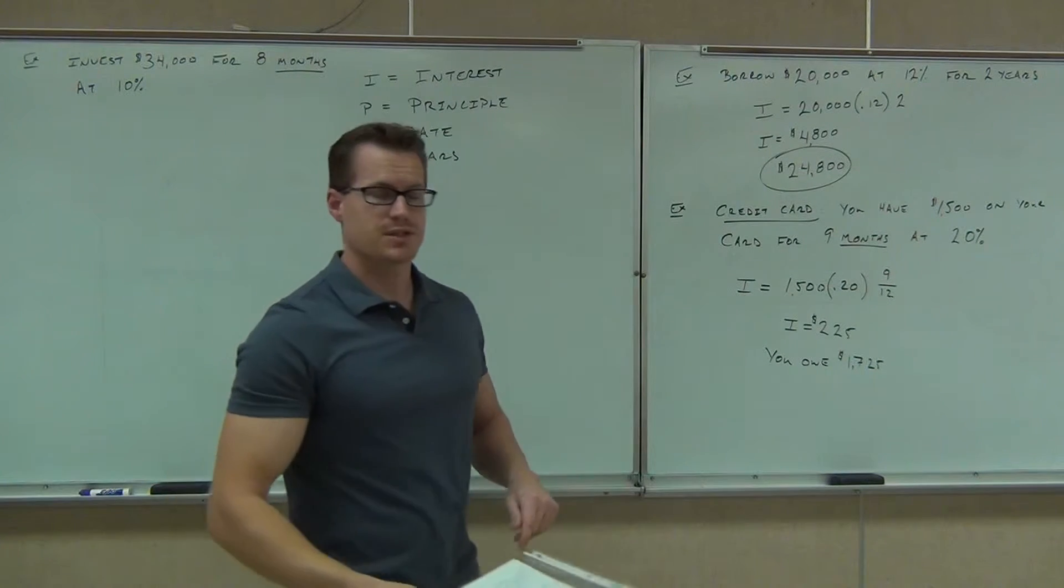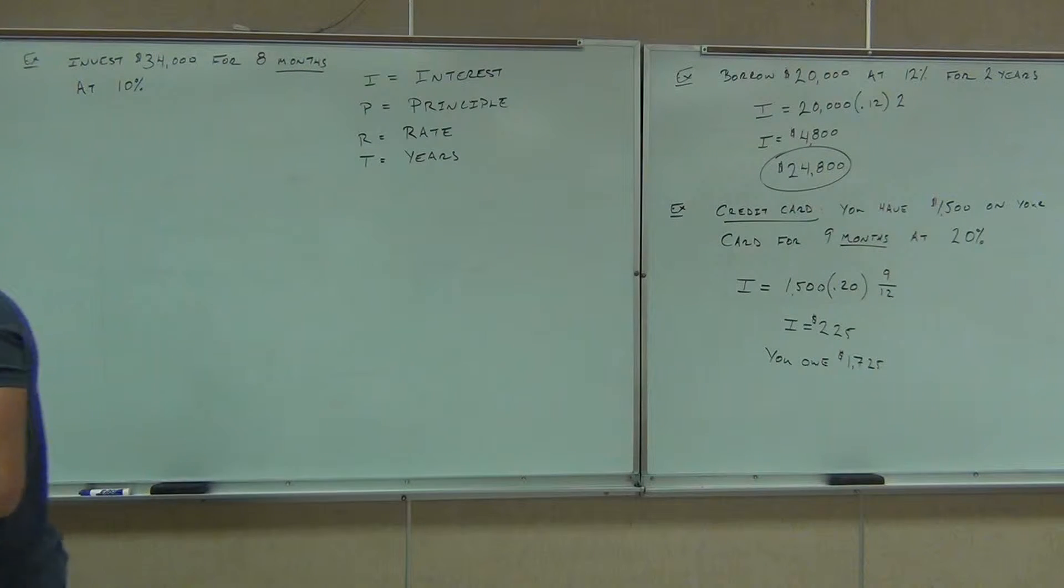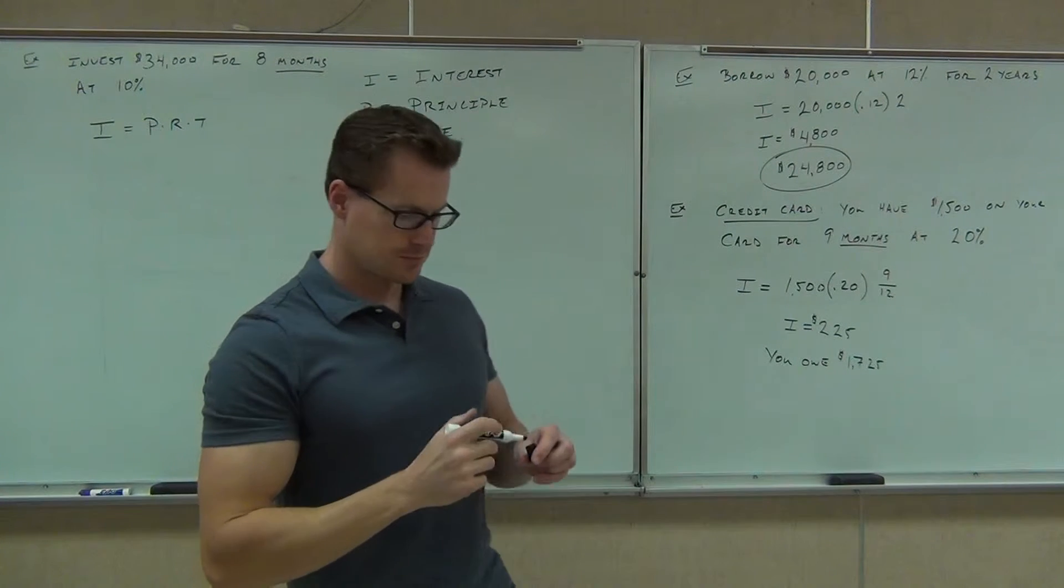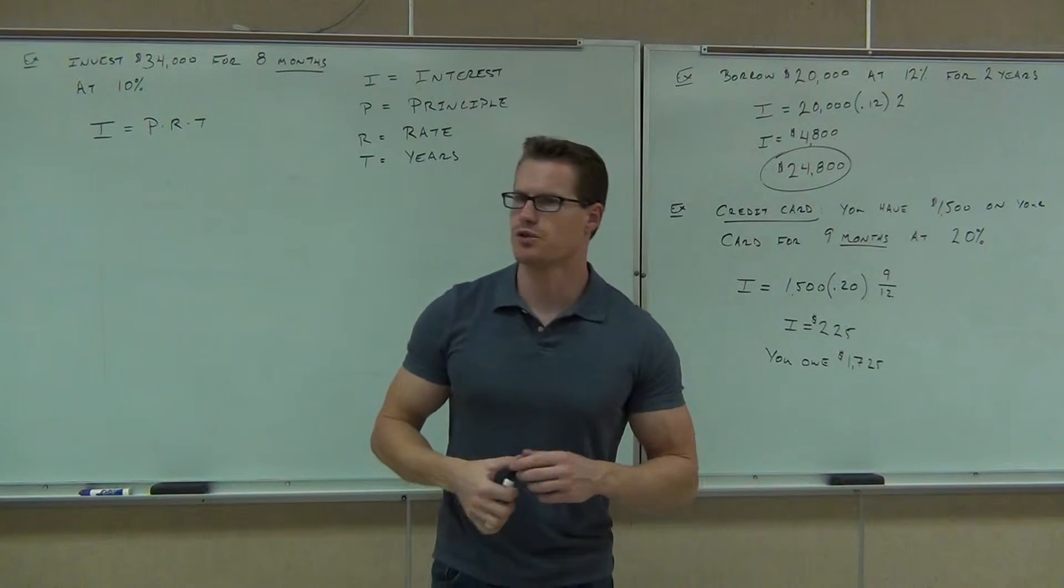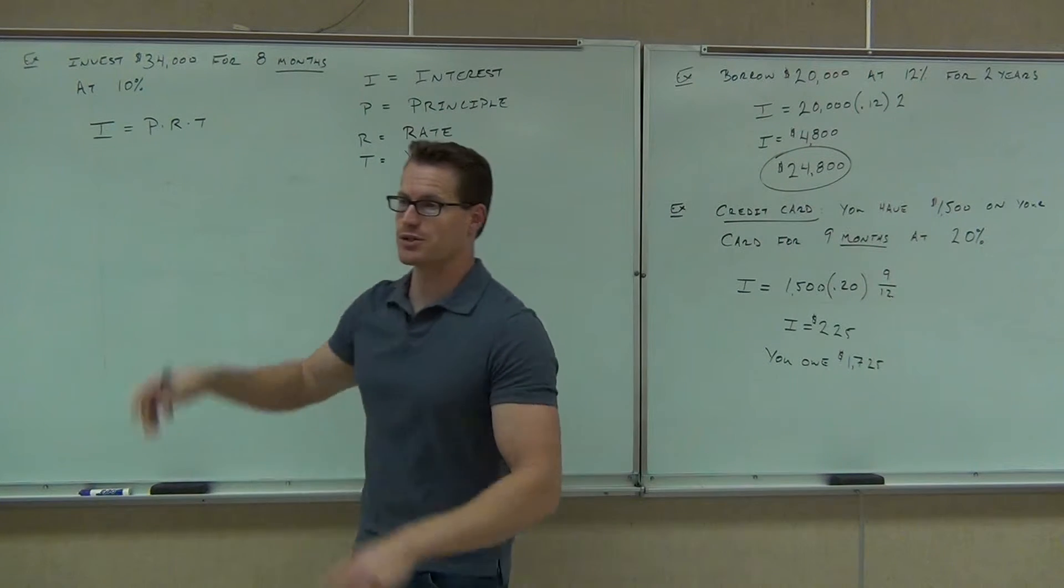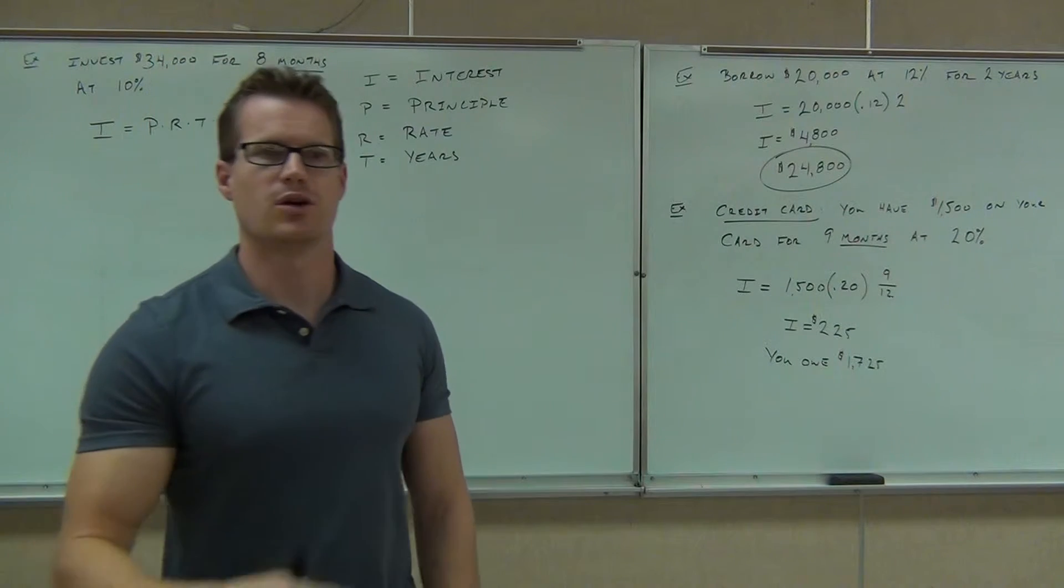$34,000 for eight months at 10% interest. Why don't you see how much money you're going to make? By the way, you don't have to memorize the formulas for simple interest and compound interest, which we're going to talk about in a second. I'll give them to you on the board during your test. You probably will memorize that one just because you'll be working with it a lot, maybe even the next one, but you're not required to.